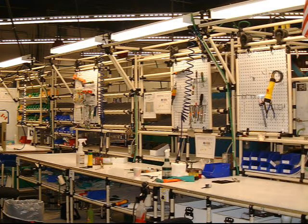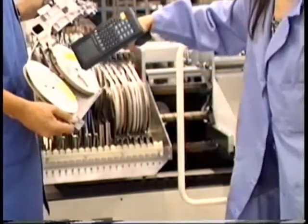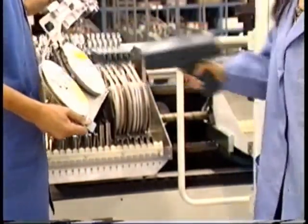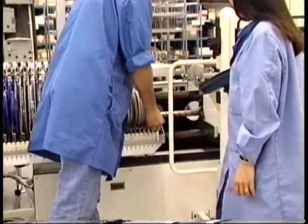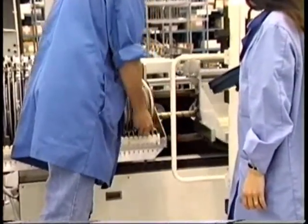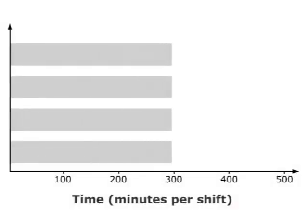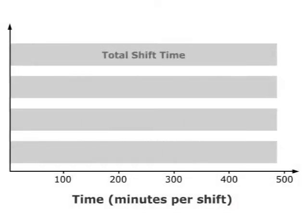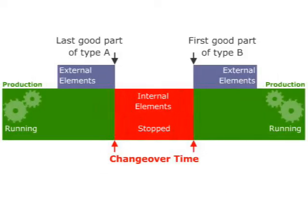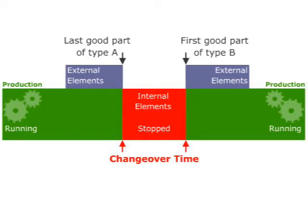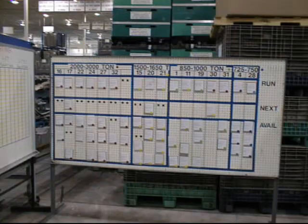Finally, you might be aiming for synchronous flow where core processes span a number of value streams, and these value streams must mesh together in a manner that maximizes flow. Understanding concepts of batch size, setup reduction, and takt time can help you here. You will explore pull systems and production leveling techniques such as heijunka boxes.